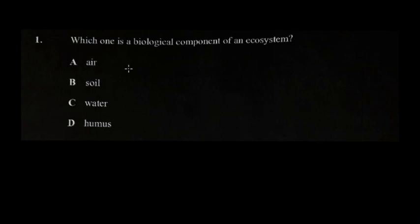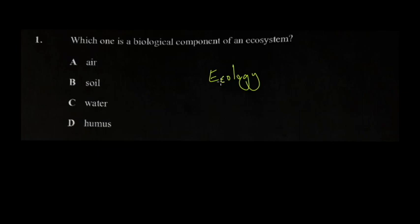The first question asks: which one is a biological component of an ecosystem? So ecosystem — there is a study called ecology, just to give you a background so we're on the same page. Ecology is simply the study of the interactions of the various components of the ecosystem. Ecosystem is another buzzword here — it simply means the coexistence and interactions between the biotic and the abiotic.